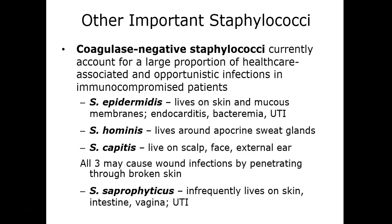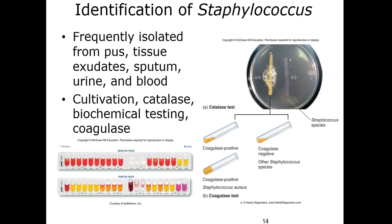To identify Staphylococci species we take tissue exudates, pus samples, sputum, urine, or blood, and perform a catalase test — probably the most important one. The catalase test tells us whether we have a Staphylococcus or a Streptococcus. Coagulase testing then tells us whether we have Staphylococcus aureus specifically or some other Staphylococci species.